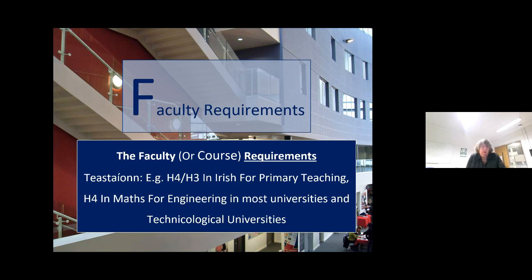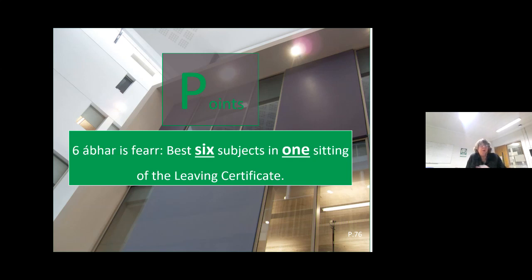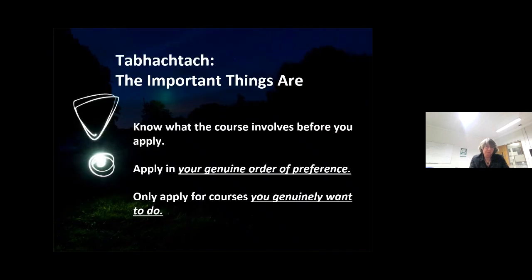Then your faculty requirements — for example, a H4 or H3 in Irish for primary school teaching, a H4 in maths for engineering in most universities and technological universities. As well as the course requirements, you have the faculty requirements. And then you have the points. In order for your son or daughter to get an offer next August, they will need to have met the college requirements, the faculty requirements, and the points for that particular course in that year. Nobody knows whether points will go up or go down — there is no guarantee. We do not have any control over the points system. In fact, it's all of the students — every student in this country who is going to be sitting the Leaving Cert — who are in competition with one another. The universities don't decide the points, the Department of Education doesn't decide the points, the school doesn't decide the points — the students themselves decide what the points are going to be.